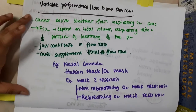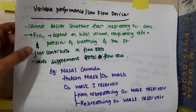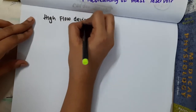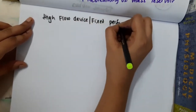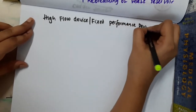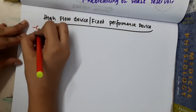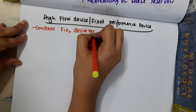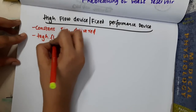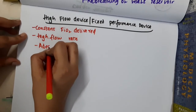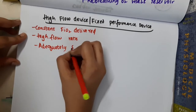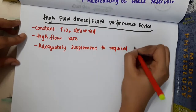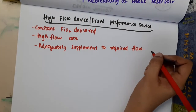High flow devices, or fixed performance devices, deliver a constant fractional inspiration of oxygen. They give a high flow rate and are used to adequately supplement to the required flow rate. If the patient needs a high flow rate, these devices will provide it.